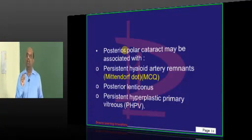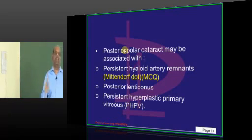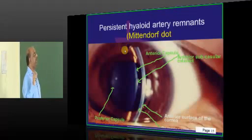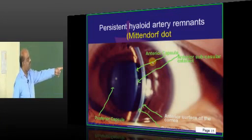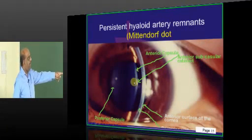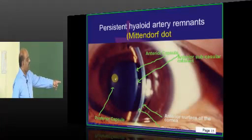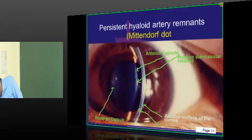One important MCQ: Mittendorf dot is associated with posterior polar cataract. It is a persistent hyaloid artery remnant. You have an anterior capsule where there can be an anterior subcapsular cataract, and on the posterior capsule there can be a dot which is the persistent hyaloid artery remnant — that dot is called the Mittendorf dot.